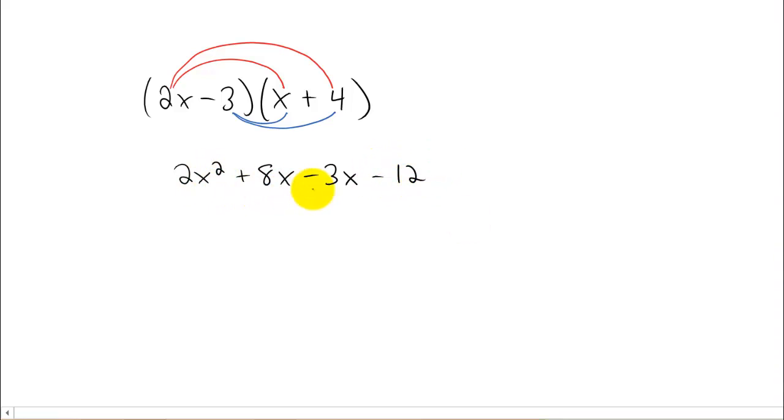So we FOIL this thing out and now we have to combine our like terms. 8x minus 3x is just going to give you 5x.